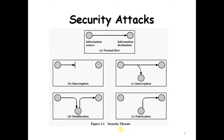Security attacks are illustrated with five diagrams: information source to information destination, then interruption, interception, modification, and fabrication. Fabrication means when we are modifying the main data and transferring that data to the destination — this is called fabrication.